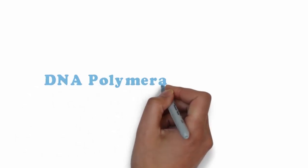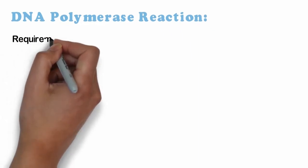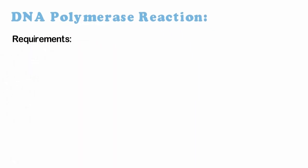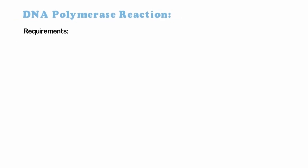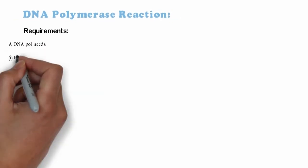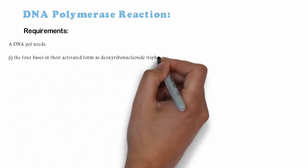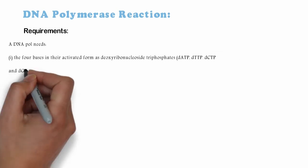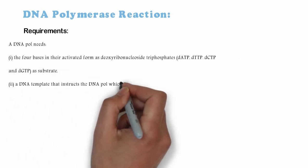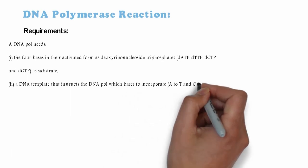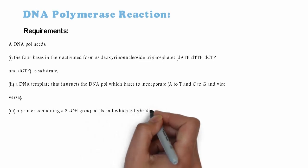DNA polymerase reaction requirements: A DNA polymerase needs (i) the four bases in their activated form as deoxyribonucleoside triphosphates as substrate; (ii) a DNA template that instructs the DNA polymerase which bases to incorporate.